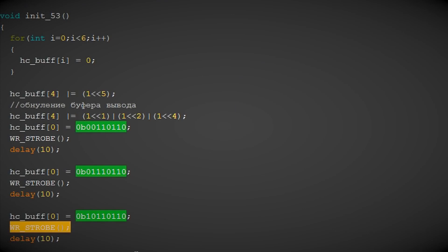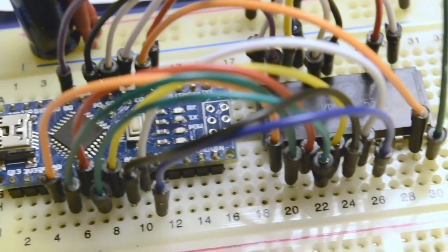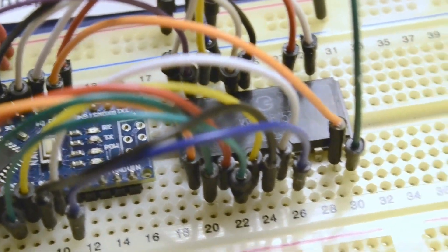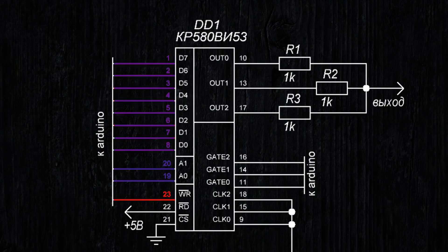We have initialized the outputs. Now we need to write a value to the counter — for example, of the first channel. Set the address to 0, 0, and write on the D lines, first the lower byte. Then toggle the write line and write the upper byte, then toggle the write line again. Now all that's left is to set the gate line to high, and a signal will appear at the output.